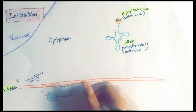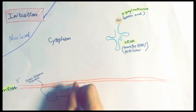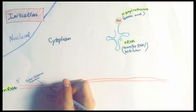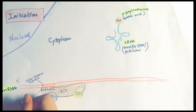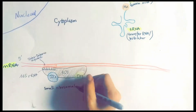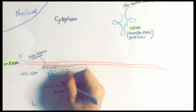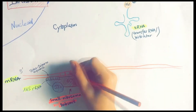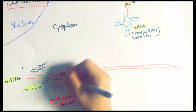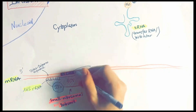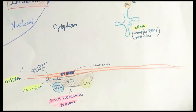Next, the mRNA binds to the 30S subunit. This binding is caused by a 9-nucleotide sequence called the Shine-Dalgarno sequence. The Shine-Dalgarno sequence is complementary to a short sequence within the 16S rRNA, which promotes the hydrogen bonding of the mRNA to the 30S subunit.